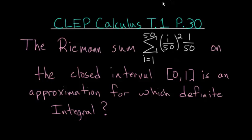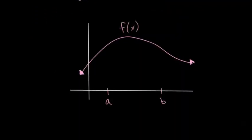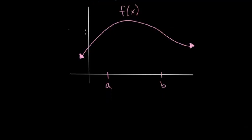For problem 30, this following Riemann sum here on the closed interval from 0 to 1 is an approximation for which definite integral. So in order to answer this question, let's take a look at some general function and think about what the definition of a definite integral actually is.